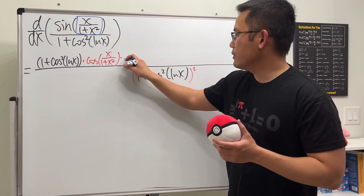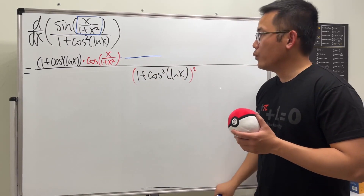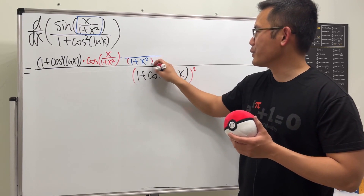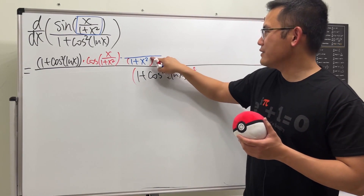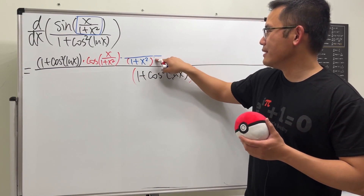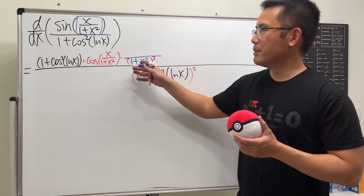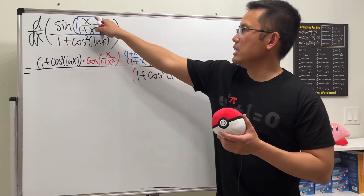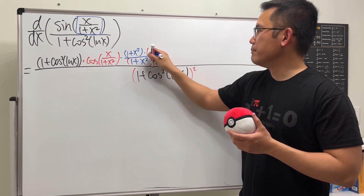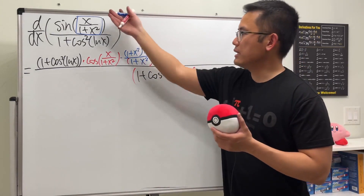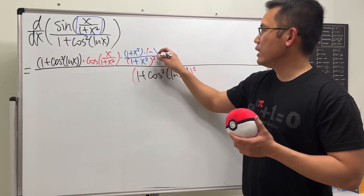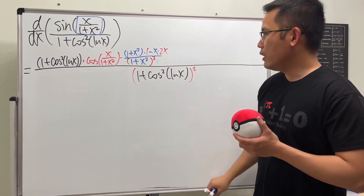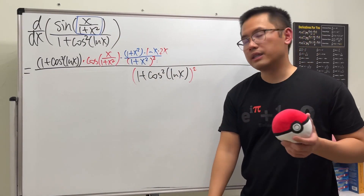For that inner quotient rule, we square the bottom: (1 + x²)². For the numerator: keep the bottom function (1 + x²), multiply by the derivative of the top which is just 1, then minus the top function x multiplied by the derivative of the bottom which is 2x. So far so good — then we continue.